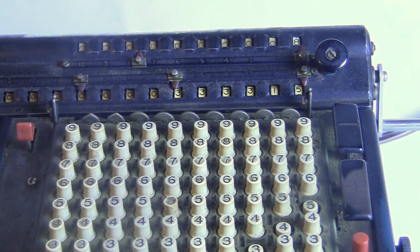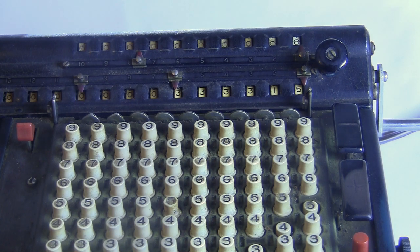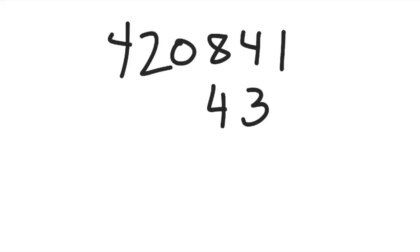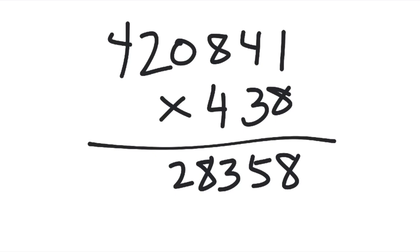Use the counter and the digit shifter to do multiplications and divisions. Like, if I'm going to do this multiplication, it looks like this.